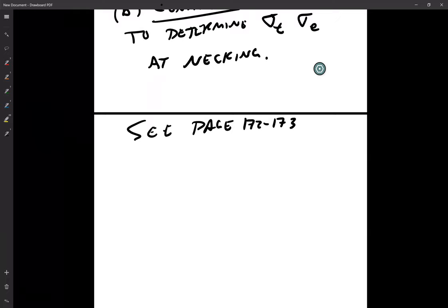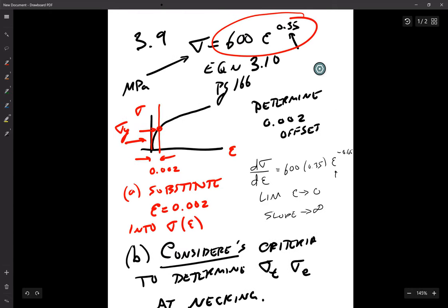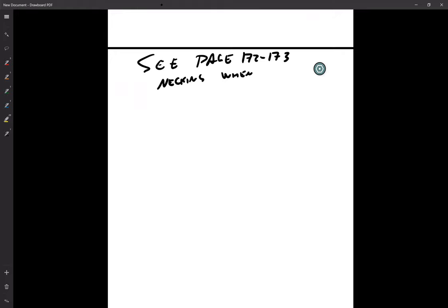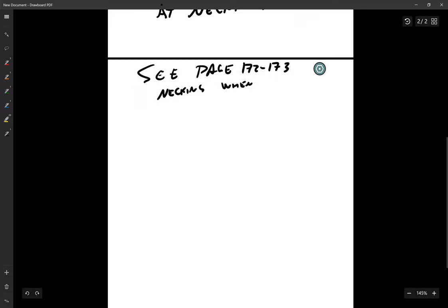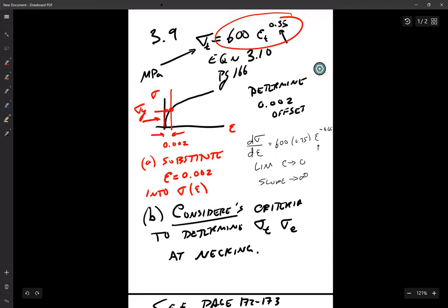And at the end of the day, we come up with this equation that necking occurs. And, of course, if you had a different stress equation than the Holloman, the book works with Holloman, but if you had a different condition, you could simply put in the different function and step through the solution. But with the Holloman equation, we find that this occurs when the strain is equal to the work hardening factor. And remember, these are true stress and strains.